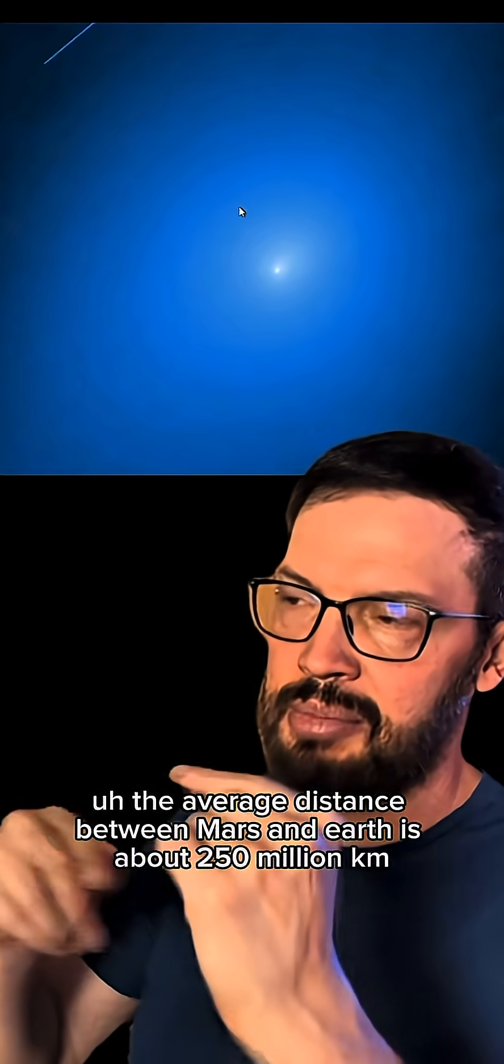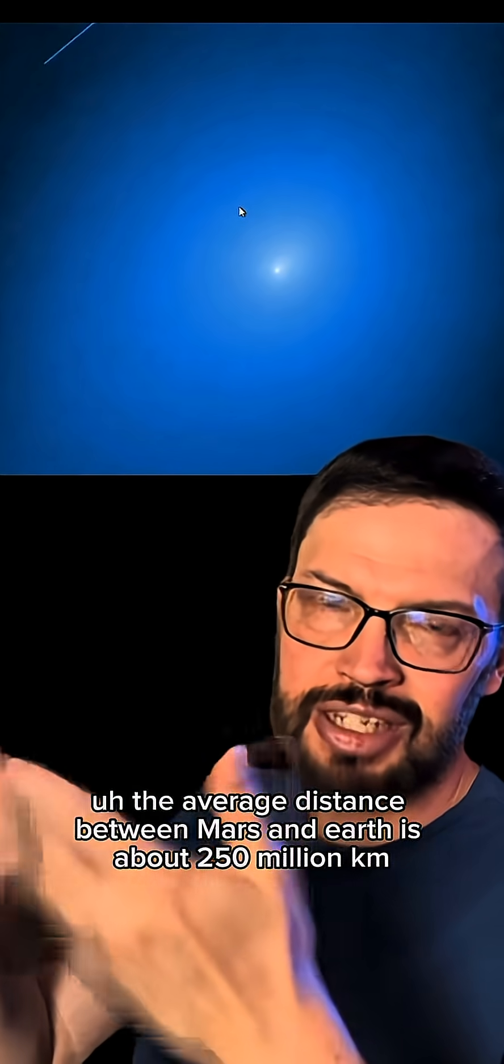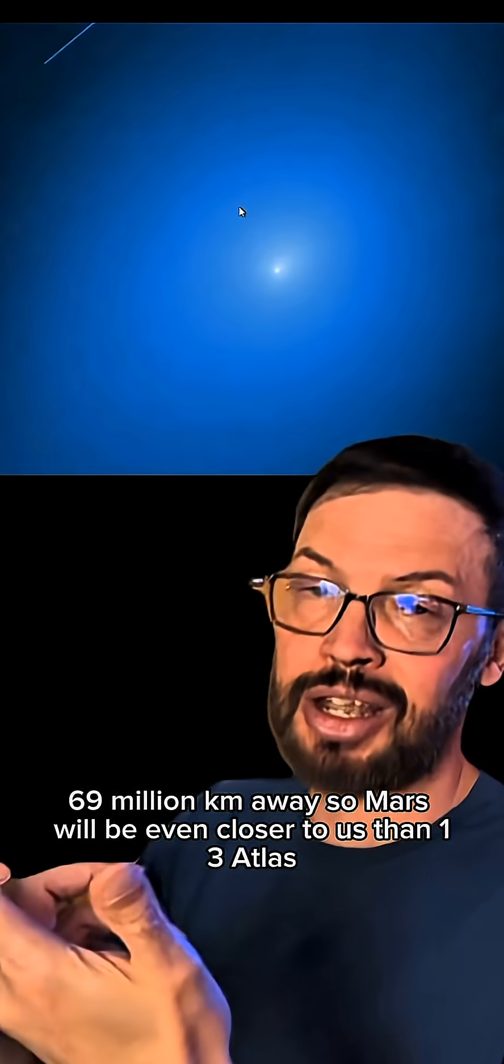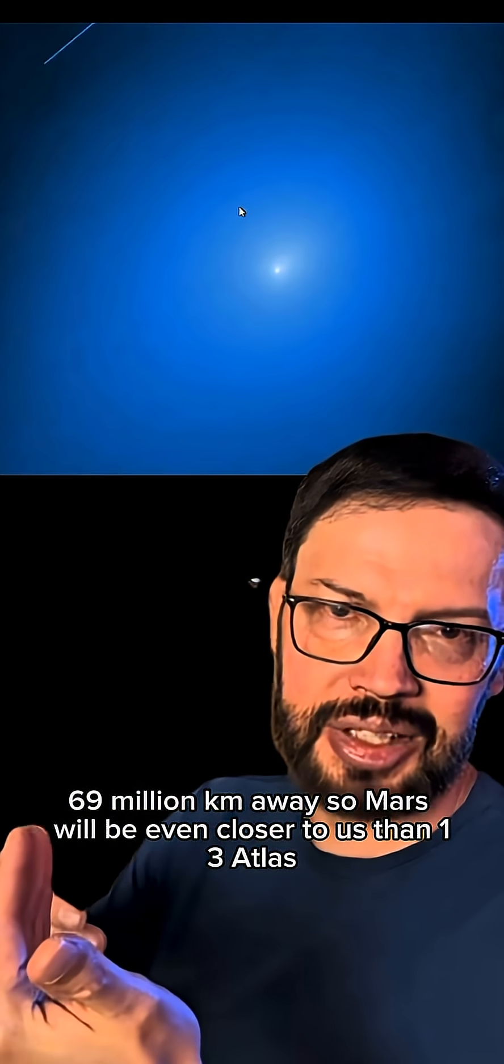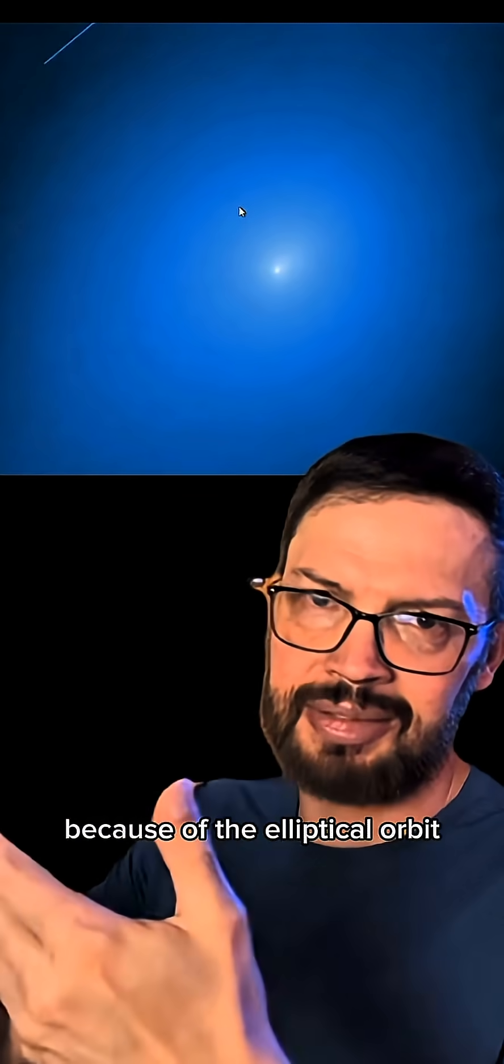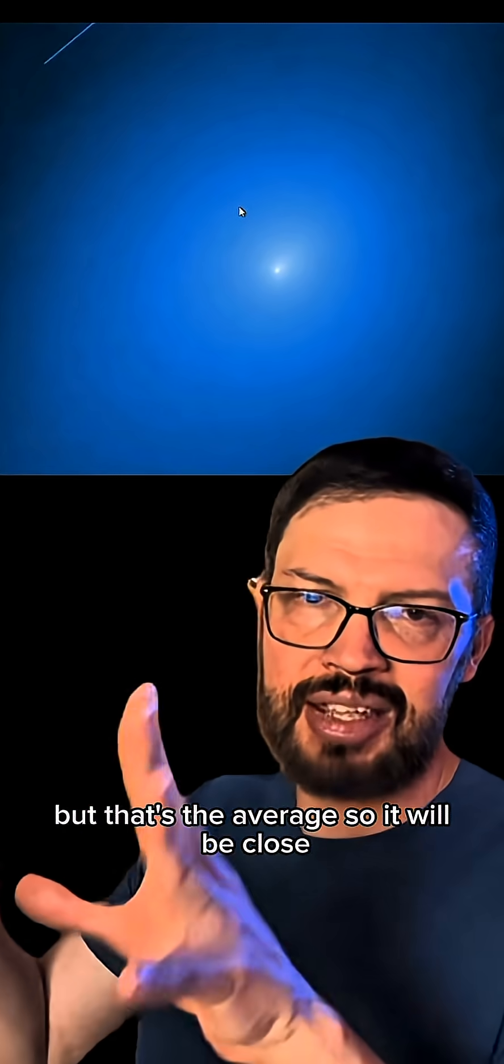The average distance between Mars and Earth is about 220 million kilometers. On the 13th, Atlas will be 269 million kilometers away. So Mars will be even closer to us than 13 Atlas. Well, actually, the distance between Mars and Earth keeps alternating because of the elliptical orbit. But that's the average.